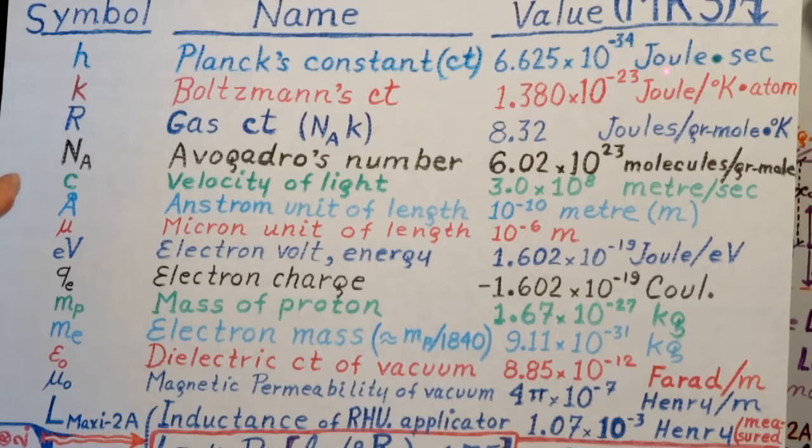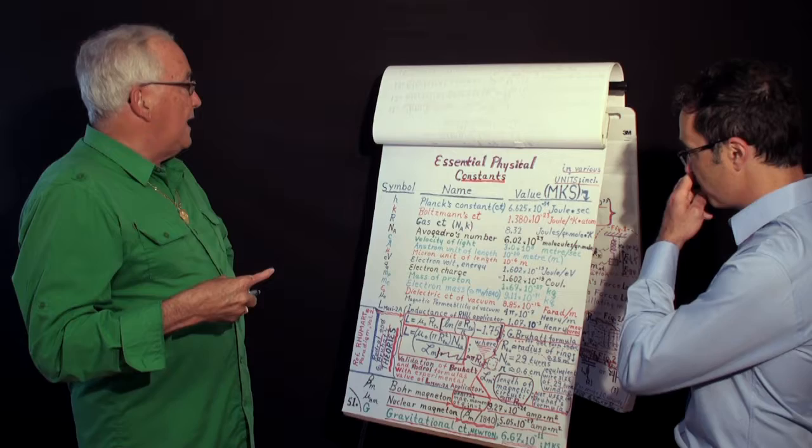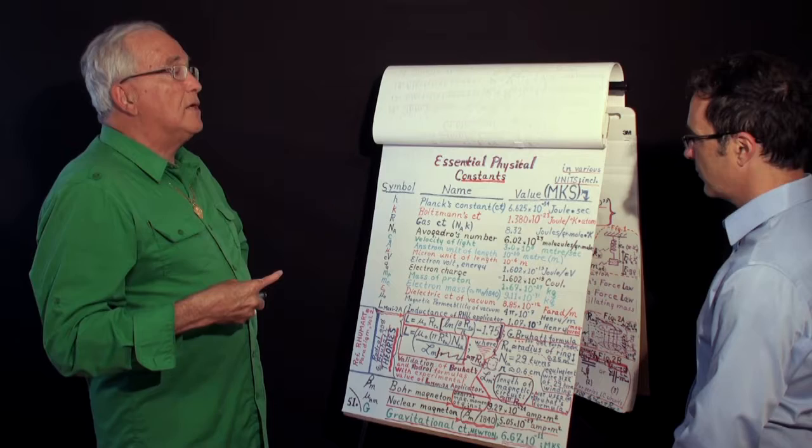Boltzmann constant, we showed how it is measured in yesterday's clip. Gas constant, microscopic gas constant. This is the Avogadro number multiplied by Boltzmann constant. Here I did not place KB because in many texts they don't use the B. But I use B because I have so many constants in what I'm talking. I have Boltzmann constant, electric constant, so I like to use subscripts.